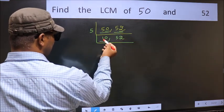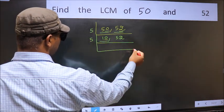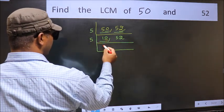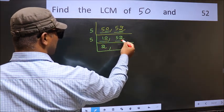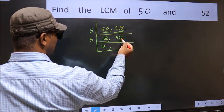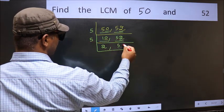Now here we have 10. Last digit is 0, so directly take 5. When do we get 10 in the 5 table? 5 times 2 is 10. The other number, 52. Last digit is neither 0 nor 5, so this is not divisible by 5. So we write it down as it is.